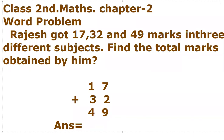The second word problem: Rajesh got 17, 32, and 49 marks in 3 different subjects. Find the total marks obtained by him. Rajesh got 17, 32, and 49 marks in 3 different subjects.